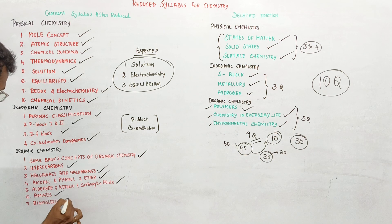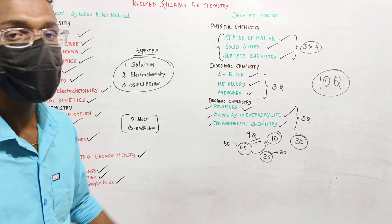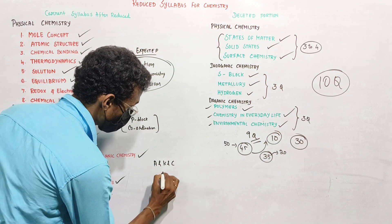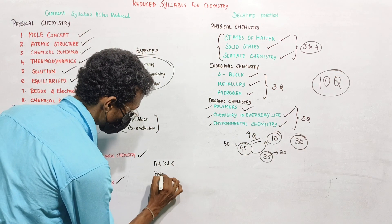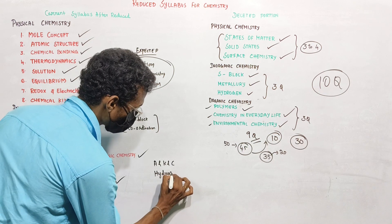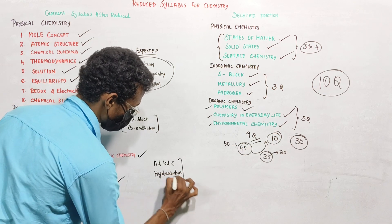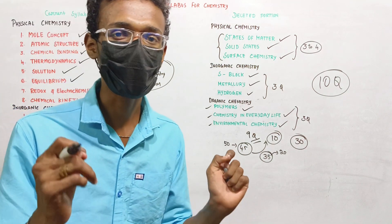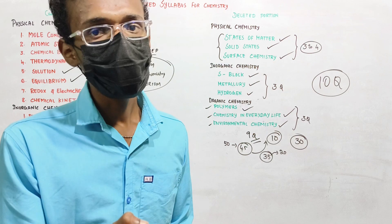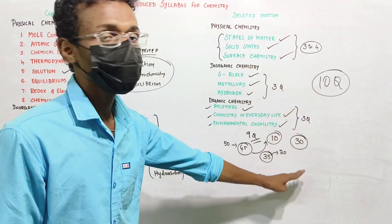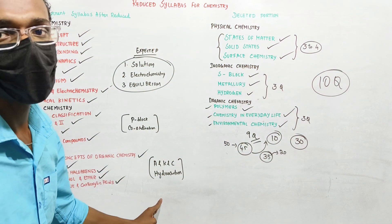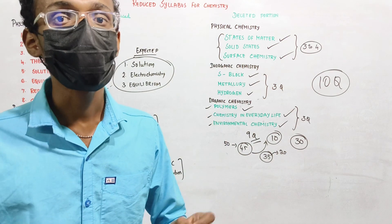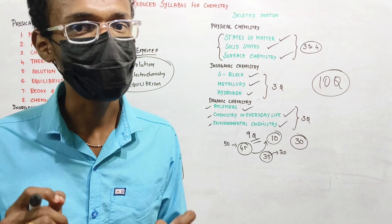For organic chemistry, the key topics are Aldehydes, Ketones, Carboxylic Acid, and Hydrocarbons. From these two lessons, the maximum chances are around three questions. Chapters 5 and 7 are very good tips — but the questions can be a little difficult.